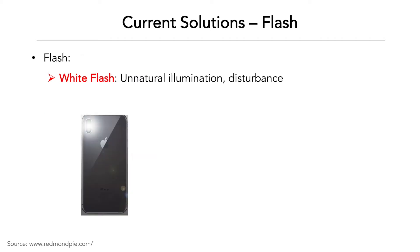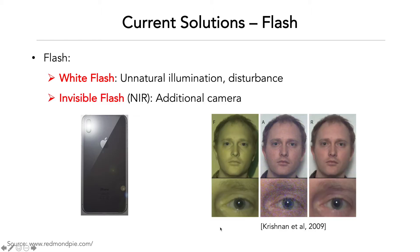Flash photography also has a long history and generally provides the best results. However, white flash dazzles human eyes and it is not user-friendly. Using invisible flashes can avoid this disturbance; however, RGB cameras do not have sensitivity to the invisible spectrum. Using white flash or NIR flash either raises social problems or requires complicated hardware. Both are not desired.